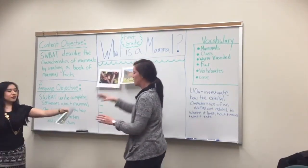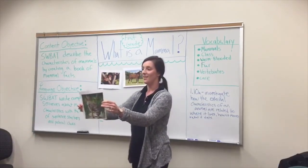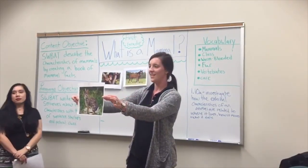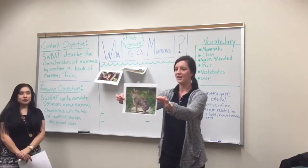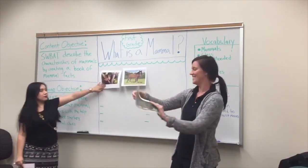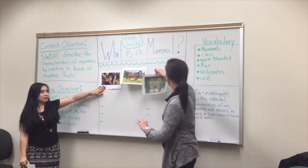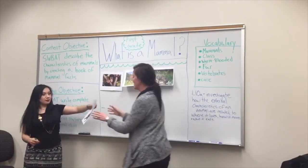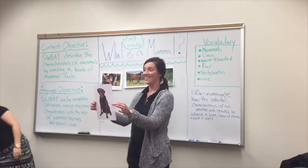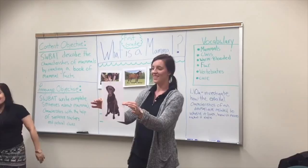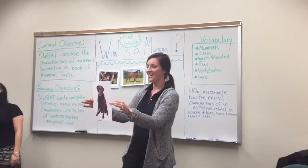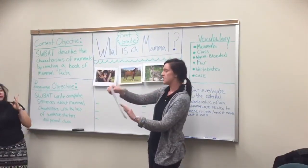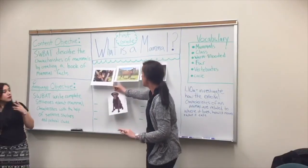Alright, so this next one — what do you see here? A horse. A brown horse. Does anyone see anything else? I see some trees. Alright. What about here? It's a rabbit. A furry rabbit.